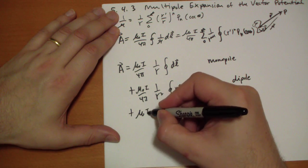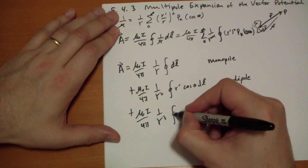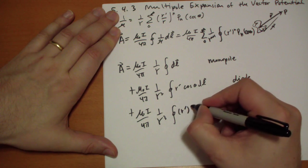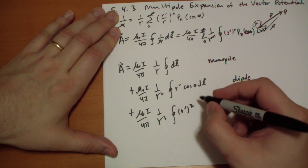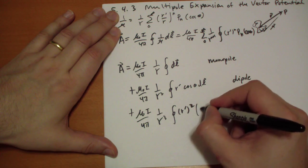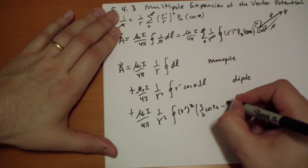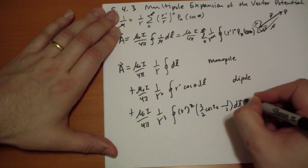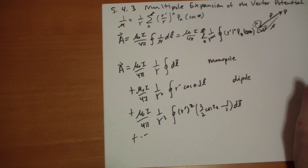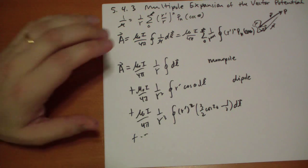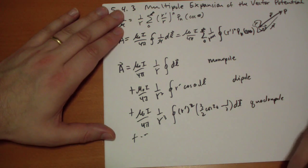Plus μ₀i over 4π, 1 over r cubed, the closed integral of r prime squared and the second Legendre polynomial, 3 halves cos squared theta minus 1 half dl vector. And you get more and more of those. Each one increases by a factor of 1 over r, and the integral becomes increasingly complicated to solve.